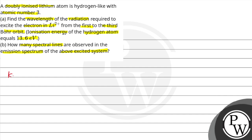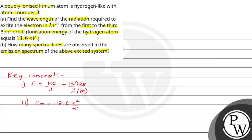यहाँ पर जो key concept हम लोग use करेंगे — हमें पता है कि energy और wavelength की बीच में relation होता है: E = hc/λ। अगर wavelength angstrom में दी है और energy electron volt में है, तो इसे 12400 divided by wavelength in angstrom के terms में लिख सकते हैं। Hydrogen-like atom के लिए nth state की energy होती है: En = −13.6 Z² / n² electron volt, जहाँ Z atomic number है और n quantum number है।